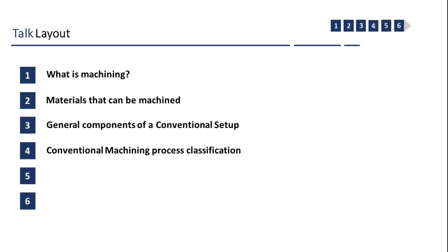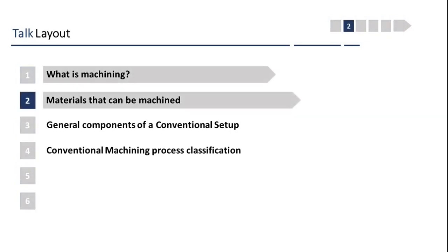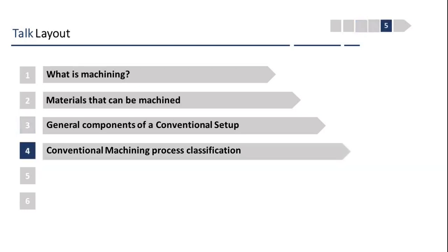First of all, we shall discuss what is machining, then we shall discuss the different materials that can be machined. Very importantly, we will be discussing the general components of any conventional machining setup. And lastly, we will discuss the conventional machining process classification, which would help us identify which process falls under which category.